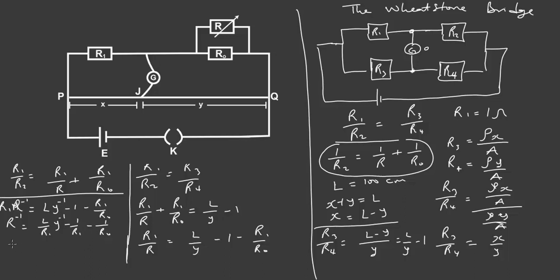From the governing equation, the slope S is the coefficient of Y⁻¹, so S equals L over R1. The Y-intercept C equals minus 1 over R1 minus 1 over R0. You can also determine the X-intercept by setting R⁻¹ to zero and solving for Y. This is the equation governing this experiment.